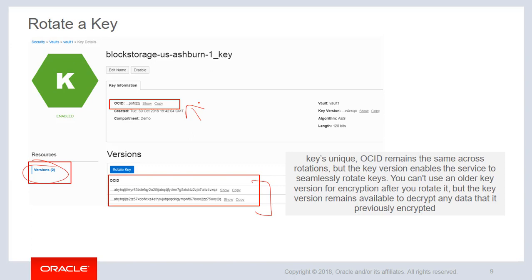The key's unique OCID remains the same across rotations, but the key version enables the service to seamlessly rotate keys. Keep in mind that you cannot use an older key version for encryption after you rotate it, but the key version remains available to decrypt any data that it previously encrypted.